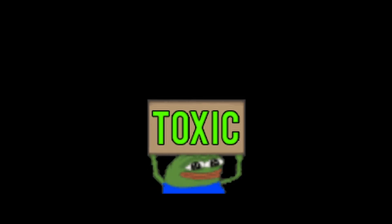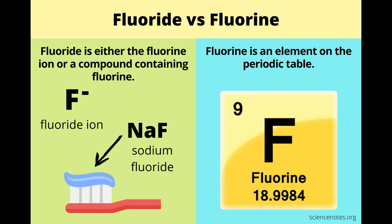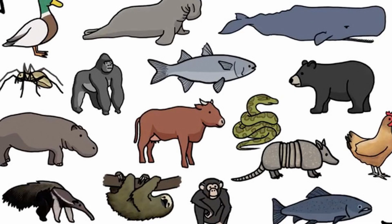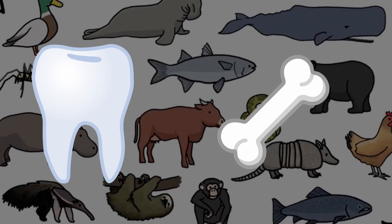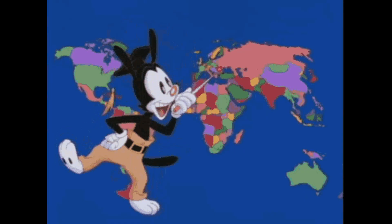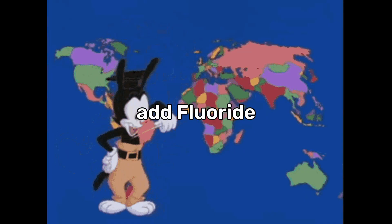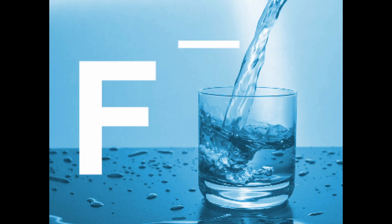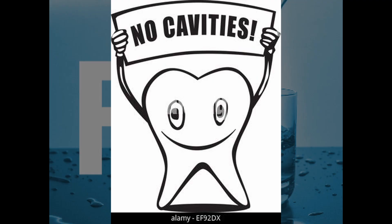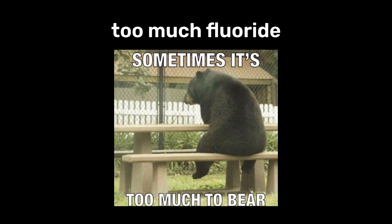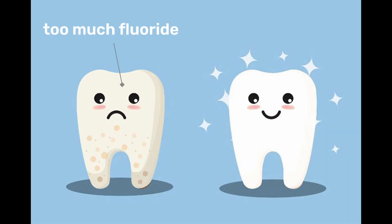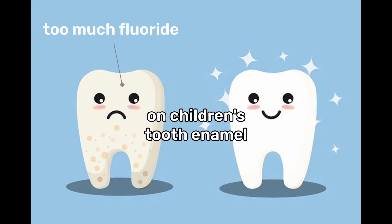While fluorine itself is highly toxic, fluoride is an essential ion for animals, strengthening teeth and bones, which is why it is often added to toothpaste. Some countries even add fluoride to drinking water, as its presence is believed to help prevent dental cavities. Excessive exposure to fluoride may cause dental fluorosis, resulting in spots, streaks, or discoloration on children's tooth enamel.